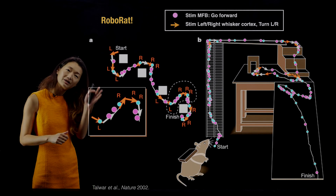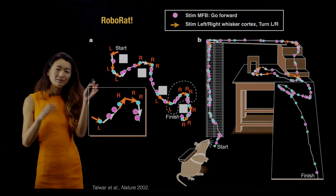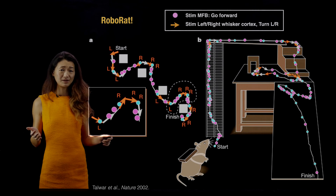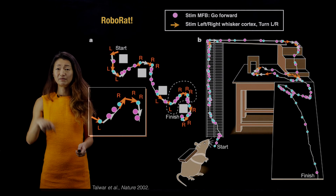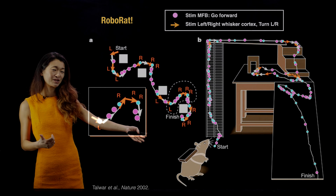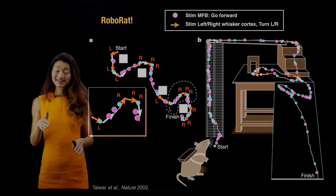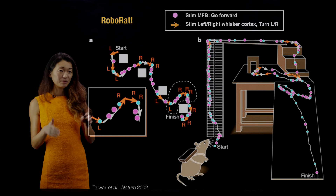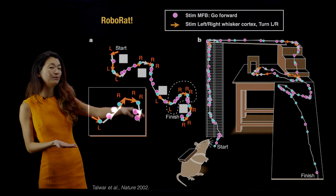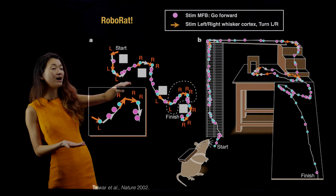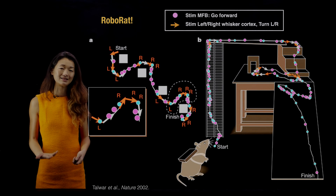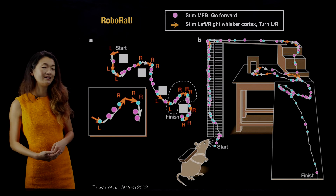They also implanted two other wires — one corresponding to the part of the brain for the left whiskers, and one for the right whiskers, as if something was touching the rat on the left or right side. So you have a robo-rat with three buttons: one makes it go forward, one makes it go left, and one makes it go right. Without training, just by pressing those buttons stimulating the medial forebrain bundle and whisker cortices, the rat navigated a relatively complicated maze.